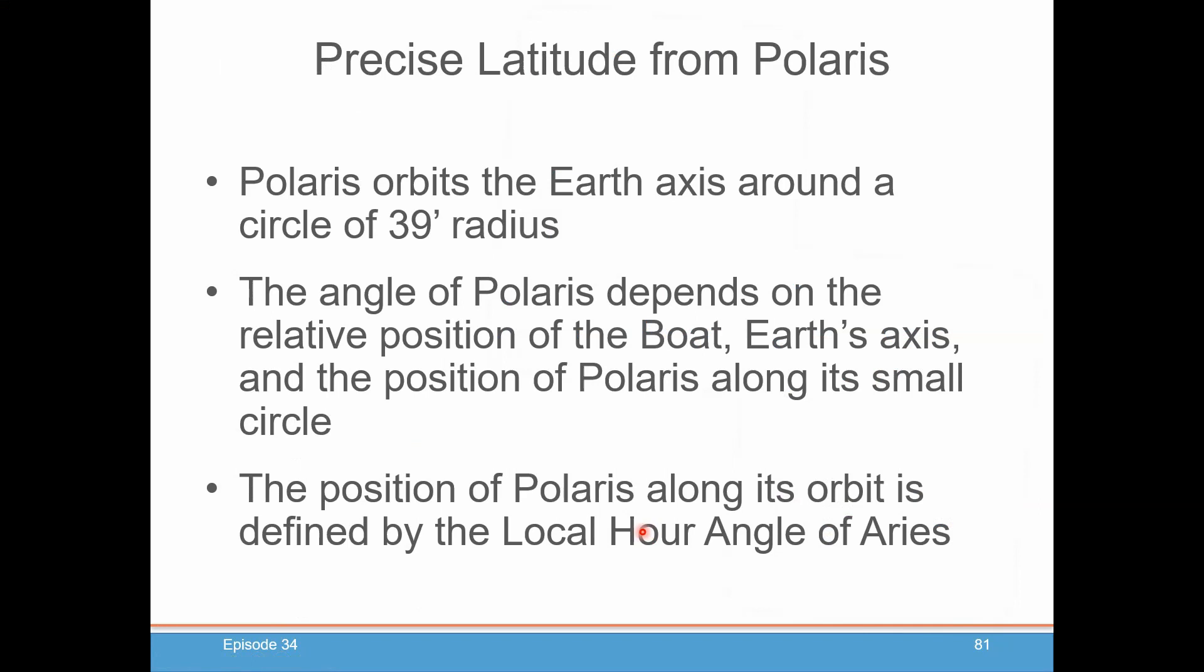So let's get into the precise latitude from Polaris. As we talked about previously, Polaris orbits the Earth's axis in a circle of about 39 minutes radius, basically half a degree. And that changes from year to year. It's going to get closer to the pole, so this number will go down a little bit.